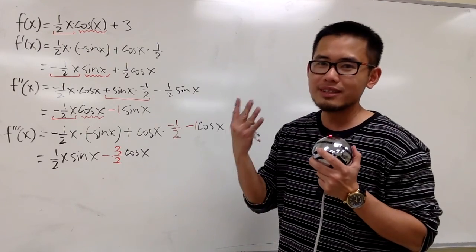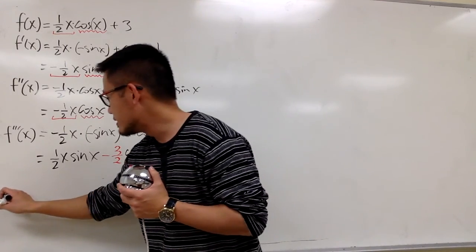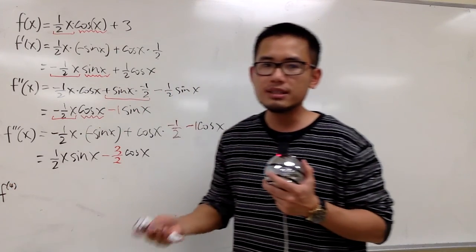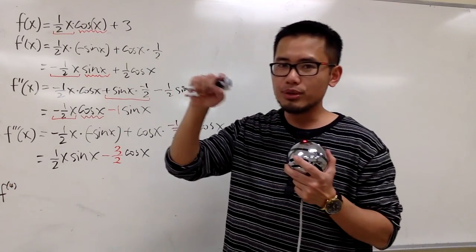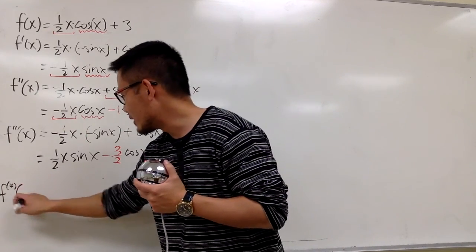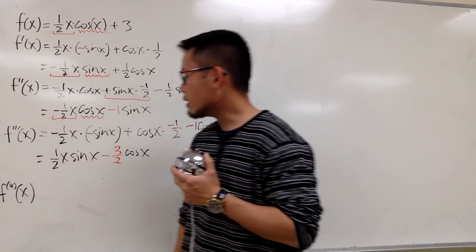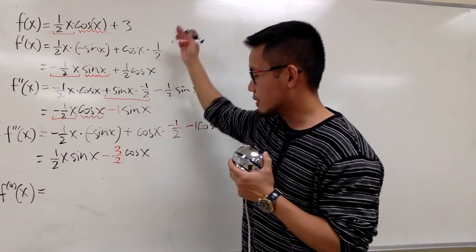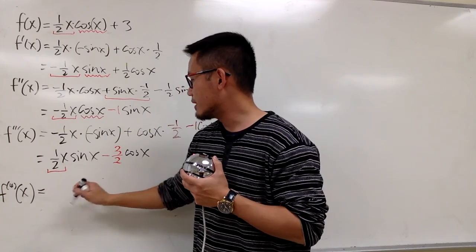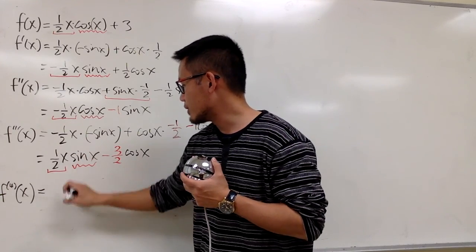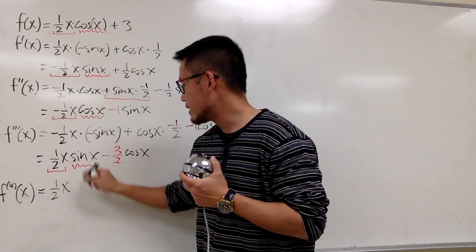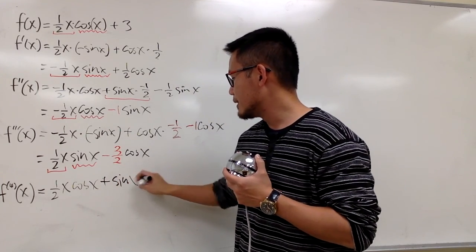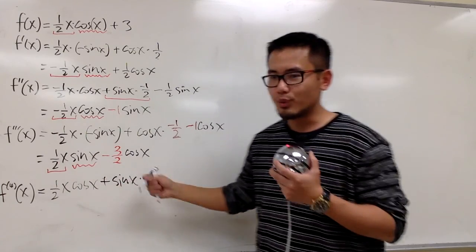Now moving on to the fourth derivative. The symbol is f with a parenthesis 4 — f⁽⁴⁾(x) — this represents the fourth derivative. We don't write four primes. So for the product rule: keep the first function ½x times the derivative of the second, which gives us cosine x, then add the second function, sine x, times the derivative of the first, which is ½.